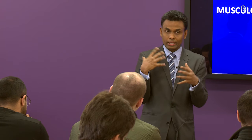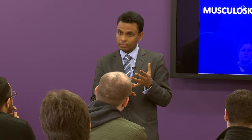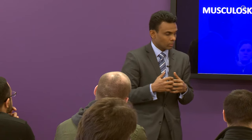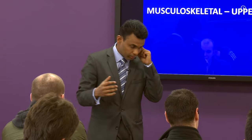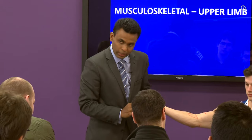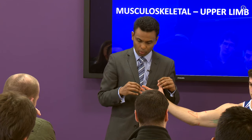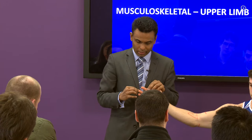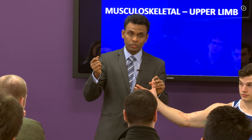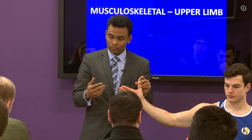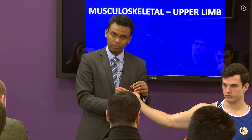In your EMQs, they often test high versus low lesion for ulnar nerve and radial nerve because of the clinical significance. At this level you do not need to know the arches, pulley system, or detailed hand anatomy beyond what has been covered.